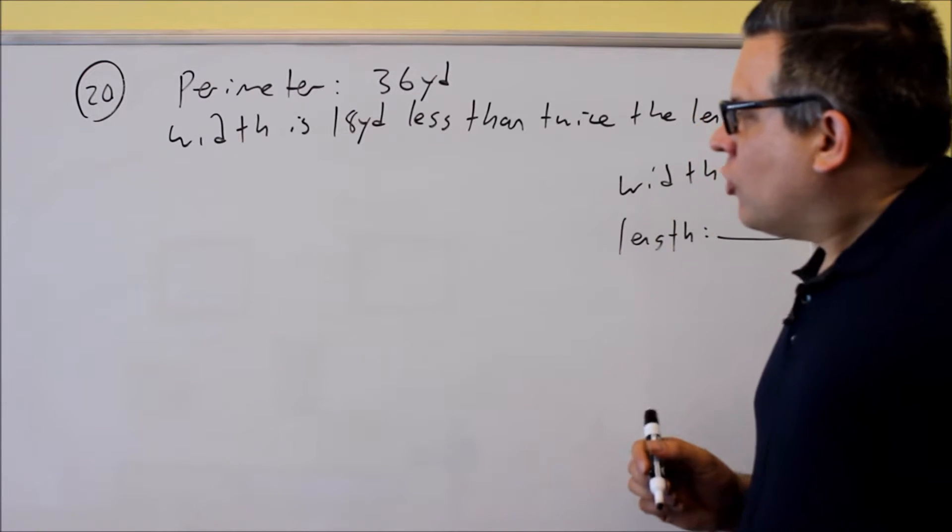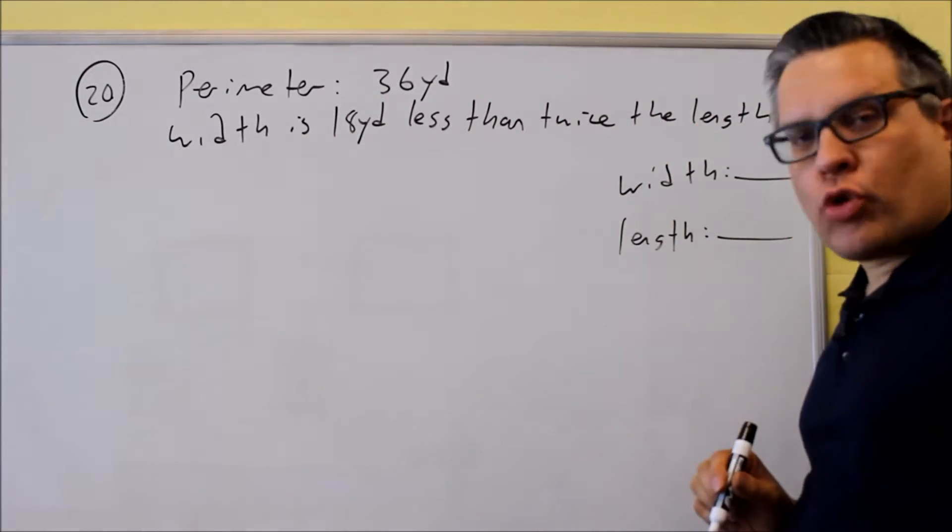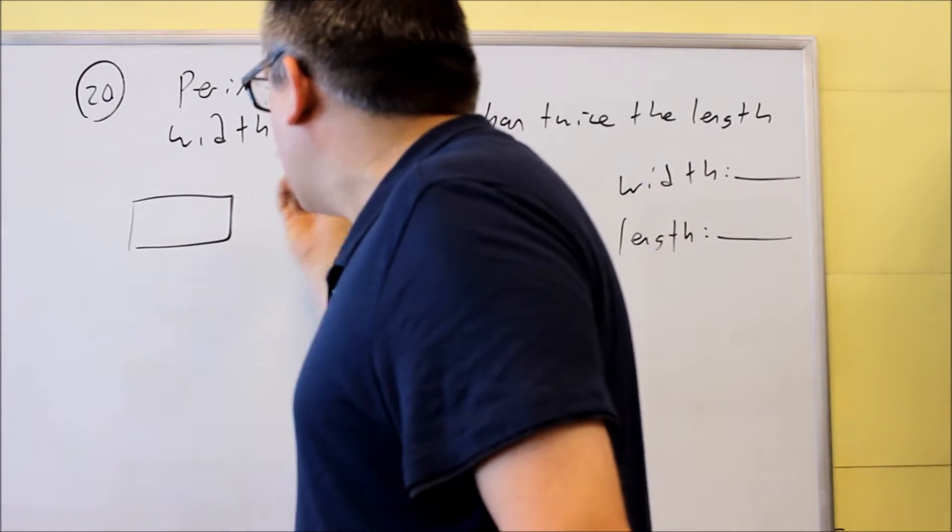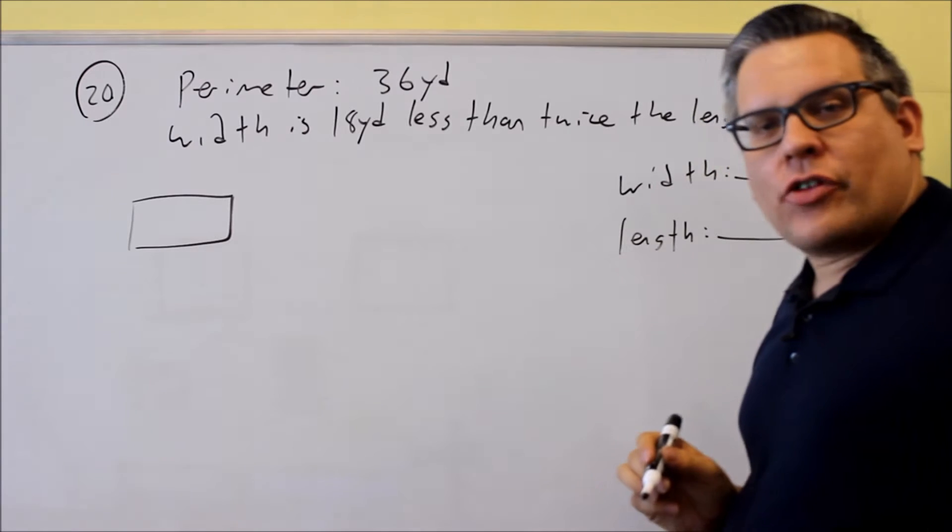First, we need to talk about what kind of equation is used for a perimeter. If you don't know what the perimeter of a rectangle is, let's draw it out, draw a visual, and we can get our equation from the picture itself.